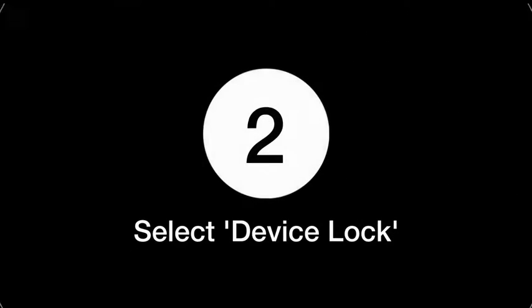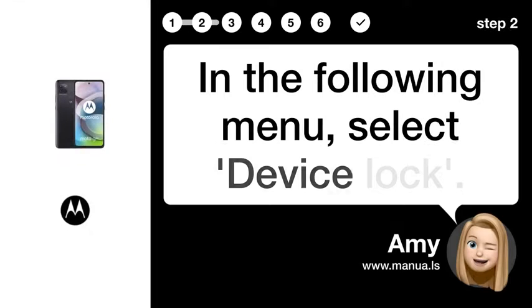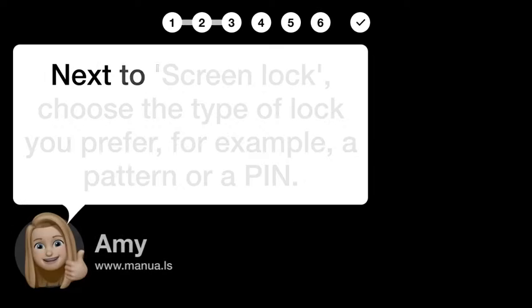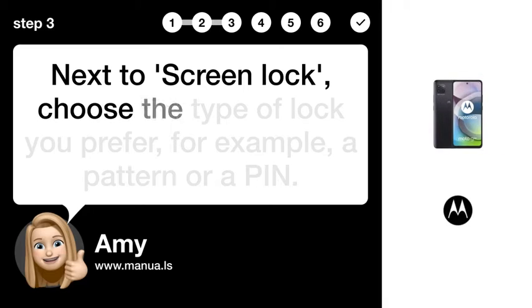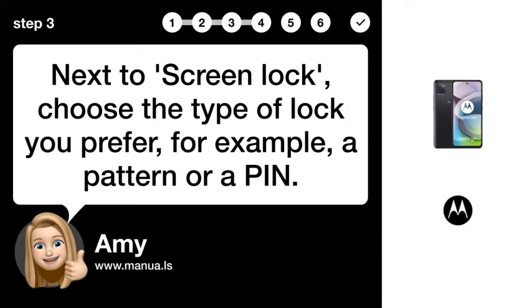Step 2: Select Device Locks. In the following menu, select Device Locks. Step 3: Choose Your Lock. Next to Screen Locks, choose the type of lock you prefer — for example, a Pattern or a PIN.